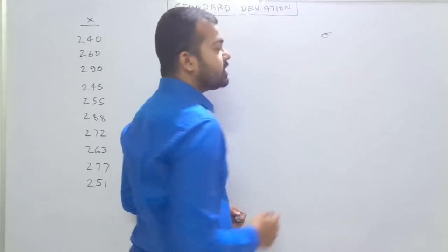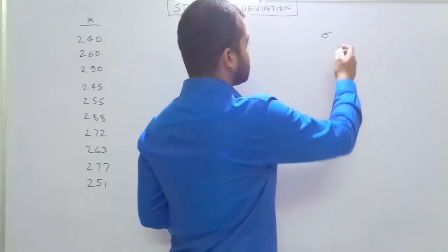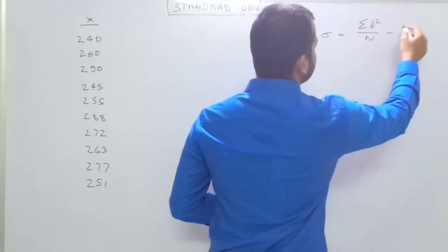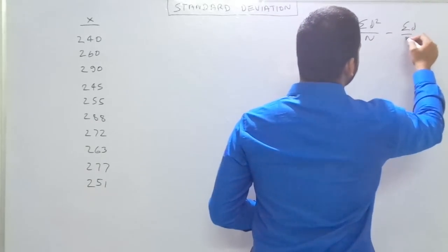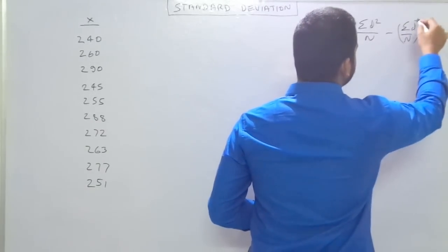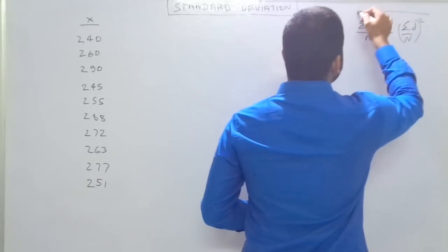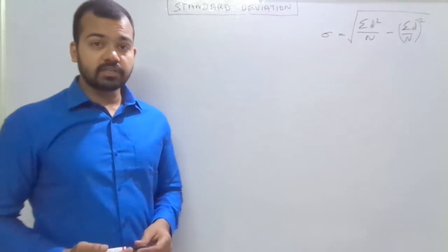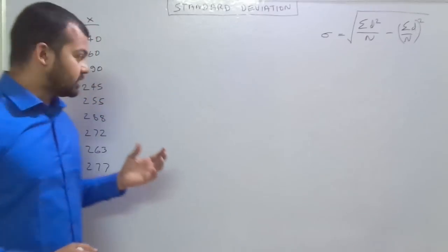That is sigma. This is how we denote the standard deviation. Summation D square upon N minus summation D upon N ka whole square. Here we have to put one square root. So this is the formula of standard deviation while we are dealing with the individual series.